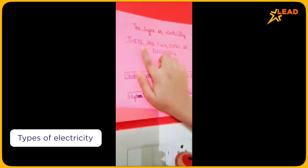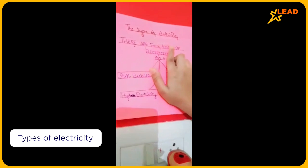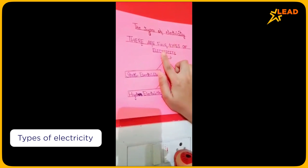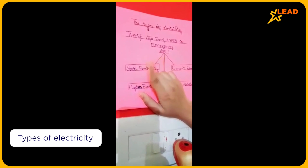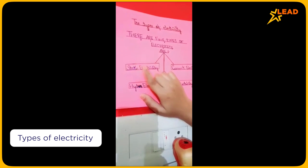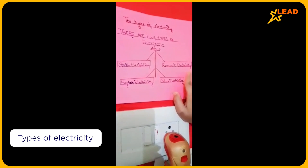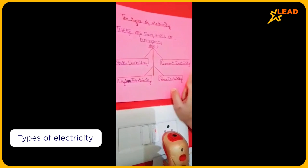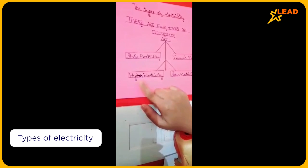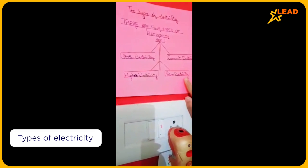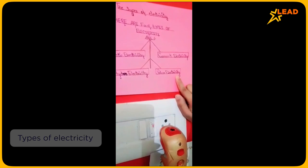There are four types of electricity. First is static electricity. Second is current electricity. Third is hydroelectricity, and fourth is solar electricity. So, there are four types of electricity.